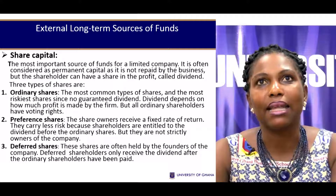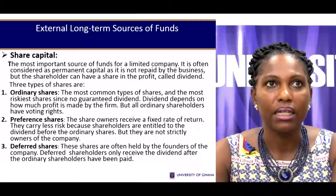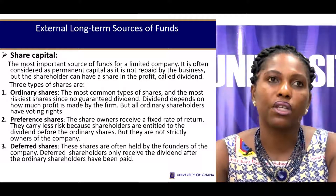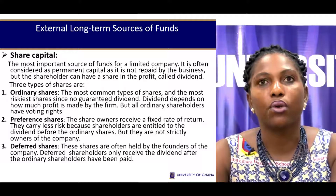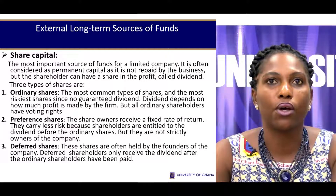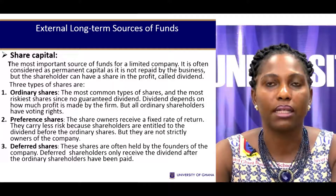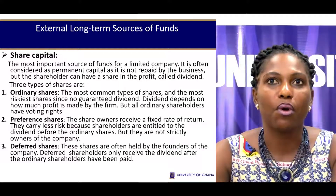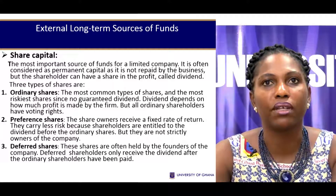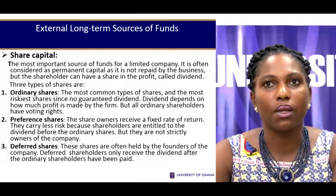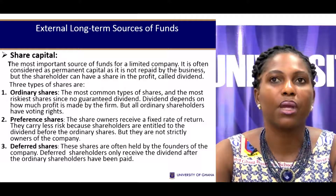Now let's turn to external long-term sources. External long-term sources usually relate to share capital and debt capital. When it comes to share capital, we look at three types. First, ordinary shares — the most common, reflecting the residual claimants. These are the common shareholders, the true owners of the business. They rise and fall with their business; their capital is more stable and the dividends they receive depend on how much profit is made by the firm and how much is declared as dividend. They have voting rights but are paid last in the event of any payments.